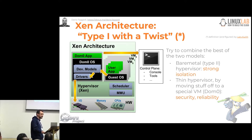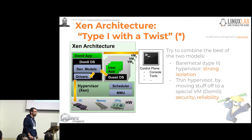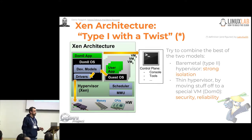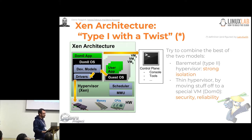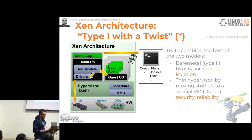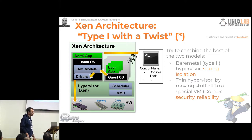There is a slight variation with respect to the classical type one hypervisor classification if you look at the Xen architecture — the fact that even though the hypervisor is the component that runs on top of the hardware, it is not there that we have the drivers for the IO devices. The drivers for IO devices in the Xen architecture are inside a virtual machine — a special virtual machine, but still a virtual machine — which is called Domain0, or Dom0, or Control Domain, or other names. This is basically to keep the hypervisor layer thin and simple.